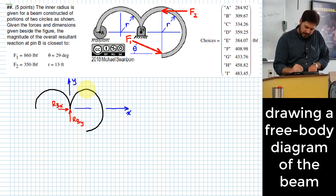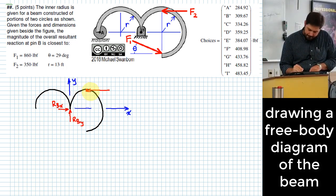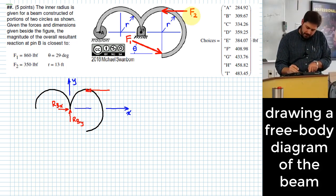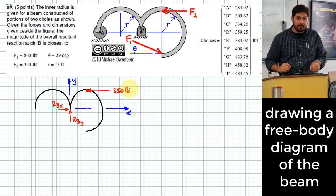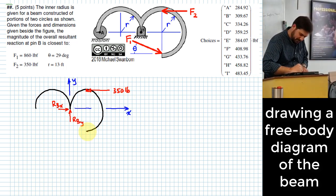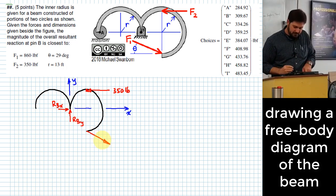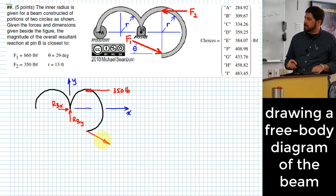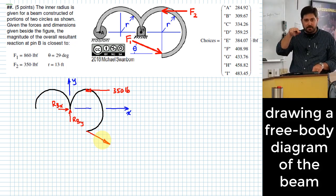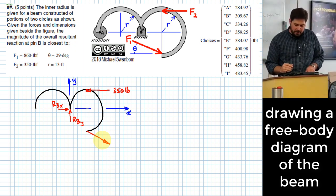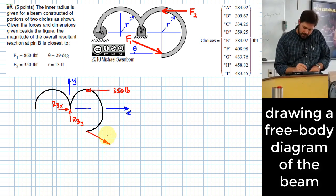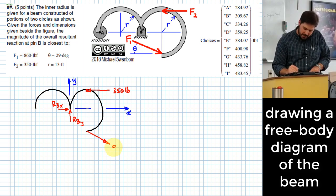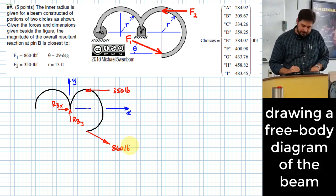Yeah, so I've got a force right here. That force F2 is 350 pounds. I also have what? I'm going to show it down here because it doesn't really make a difference showing it pointing at it versus pointing down, and it gives me more space to draw it. What do I have there? F1 is 860 pounds. What else do I have?